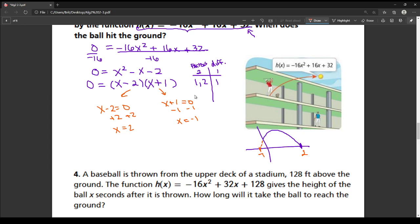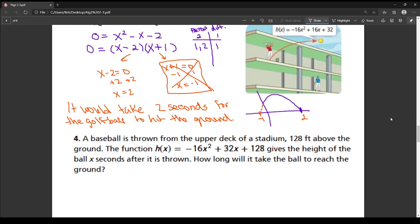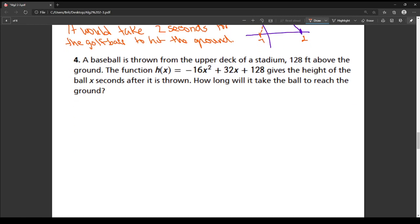So here, this negative 1 answer, it doesn't make sense within the context of our problem. And so I'm going to get rid of it as an answer, because it doesn't work within our restrictions of the problem. So the answer to this is, it would take 2 seconds for the golf ball to hit the ground. Remember if you have a word problem, you usually want to answer it with a word answer. That's why I'm writing that down.